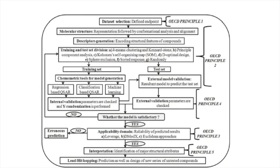According to OECD Principle 1, the endpoint should be defined. According to Principle 2, there should be an unambiguous algorithm. According to OECD Principle 4, there should be appropriate measures of goodness of fit and predictability of the model. According to OECD Principle 3, there should be a check for applicability domain. And according to OECD Principle 5, the model should have a mechanistic interpretation.